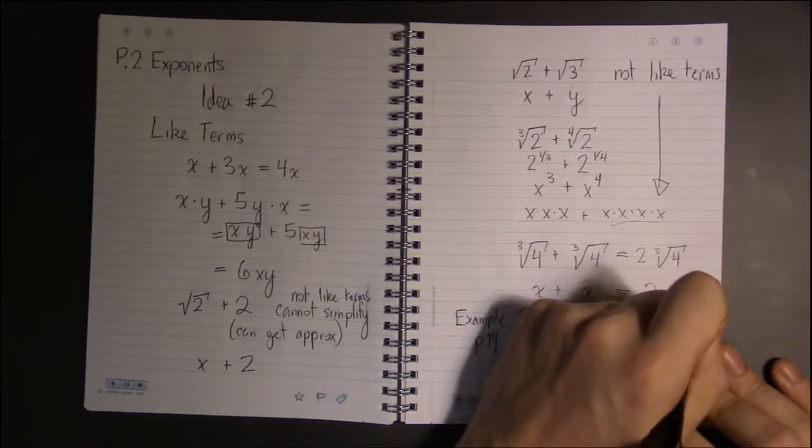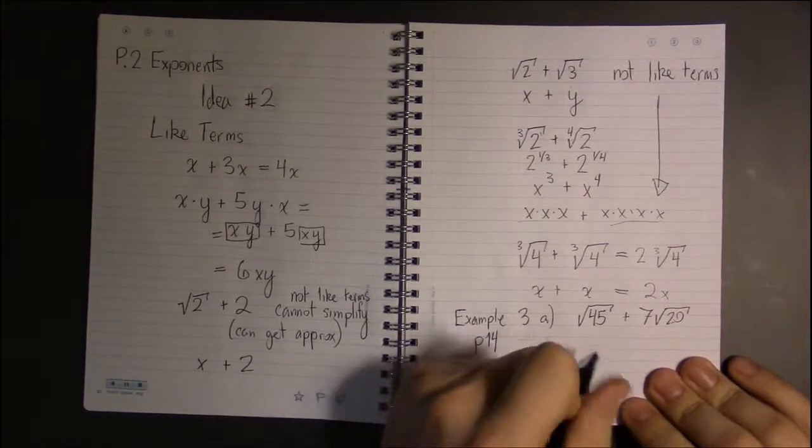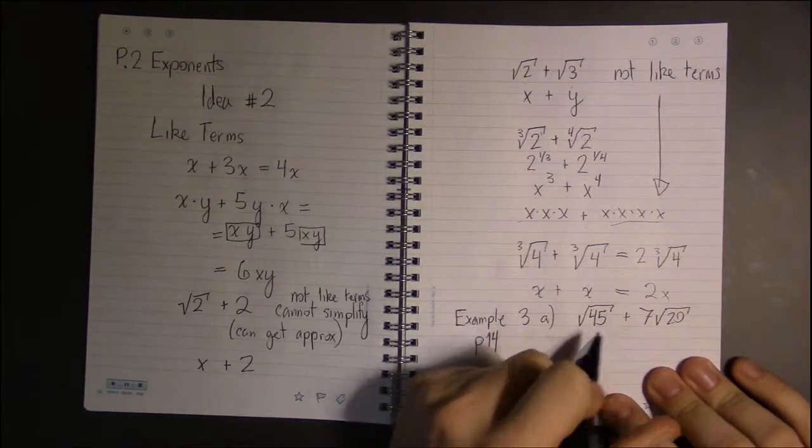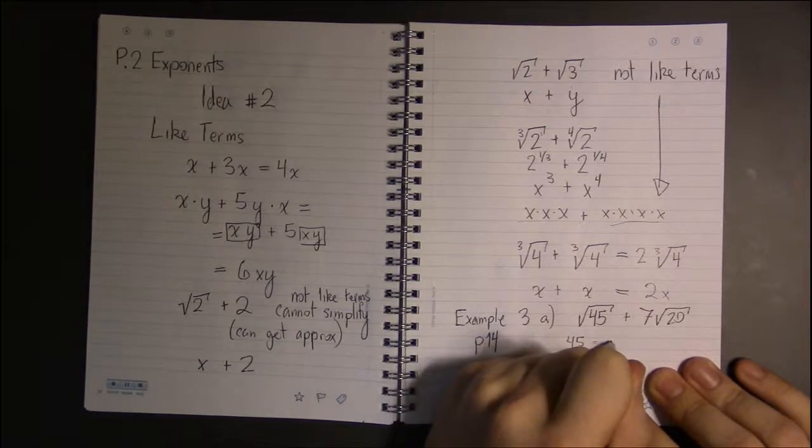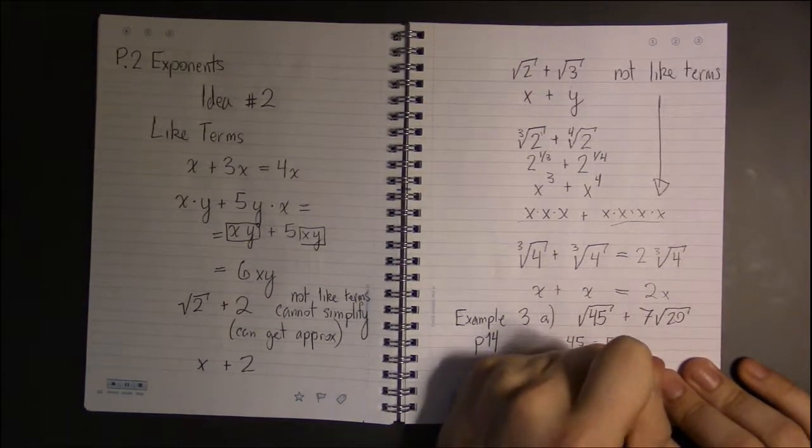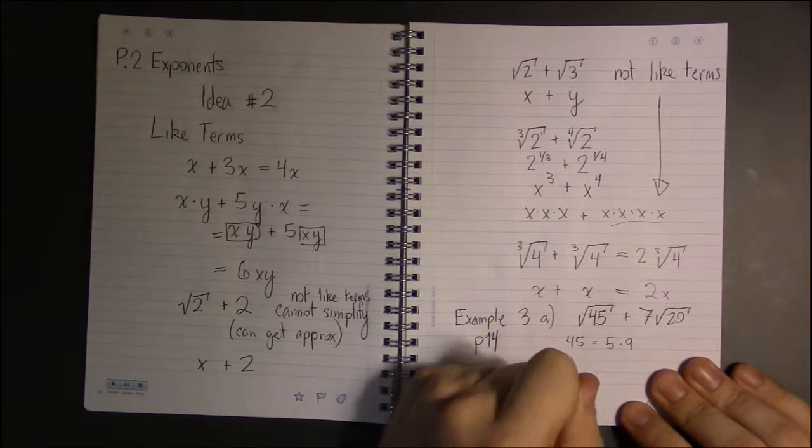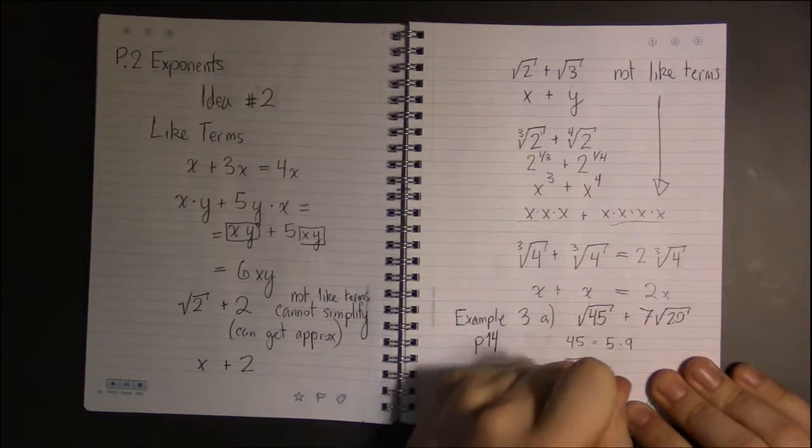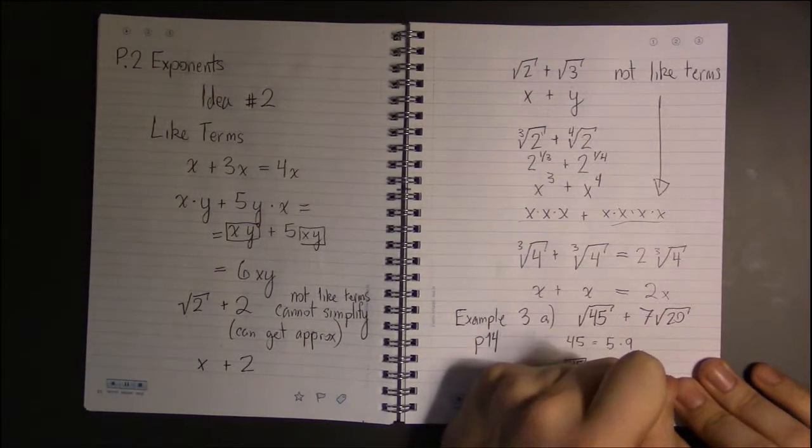But notice there's a perfect square that goes into 45. 45 is 5 times 9, and 9 is a perfect square, so the square root of 45 is just the square root of 5 times the square root of 9.